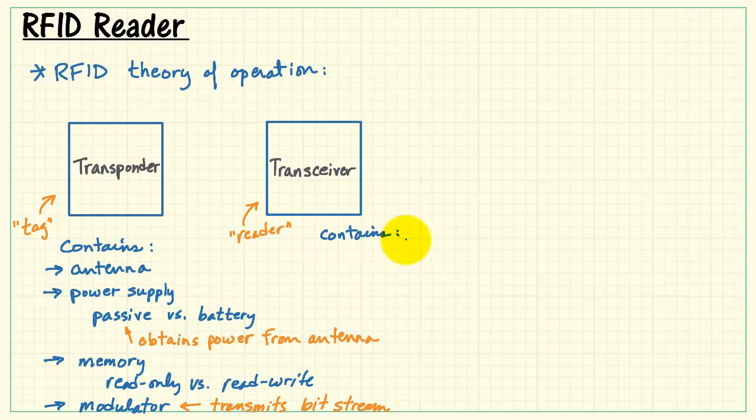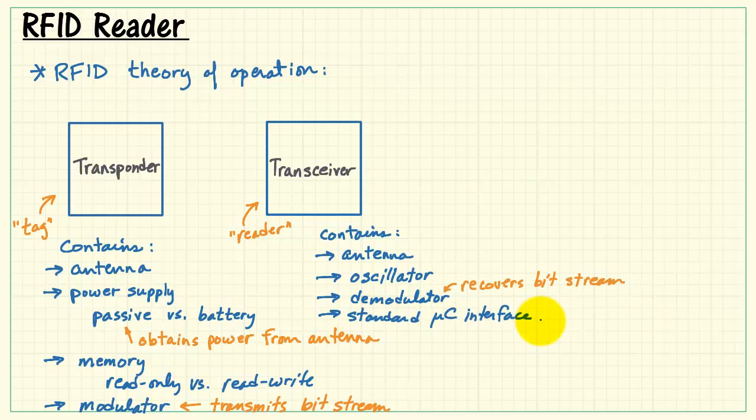Transceiver, more commonly known as a reader, contains a similar collection of components. It has an antenna, it has an oscillator for setting up an AC magnetic field, it has a demodulator for picking up that bit stream from the transponder, and it has some sort of standard microcontroller interface, for example, a UART-style output.